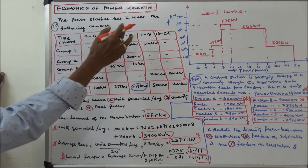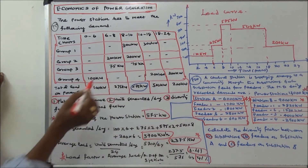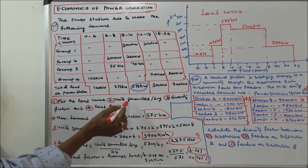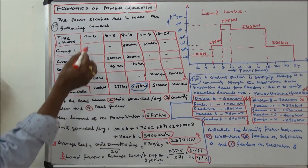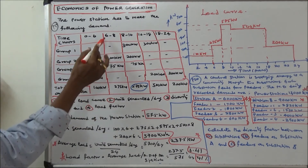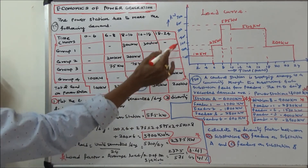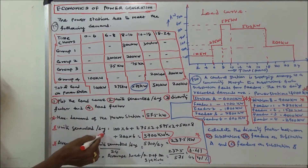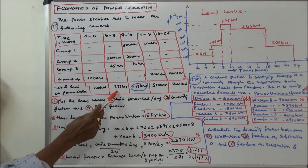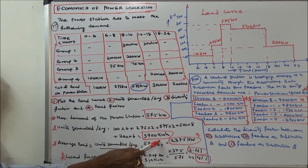Third problem: a power station meets demands for four groups. Total loads: 0–6 hours = 100 kW, 6–8 hours = 275 kW, 8–10 hours = 575 kW, 10–18 hours = 500 kW, 18–24 hours = 200 kW. Maximum demand of the power station is 575 kW. Units generated per day: 100×6 + 275×2 + 575×2 + 500×8 + 200×6 = 5700 kWh.